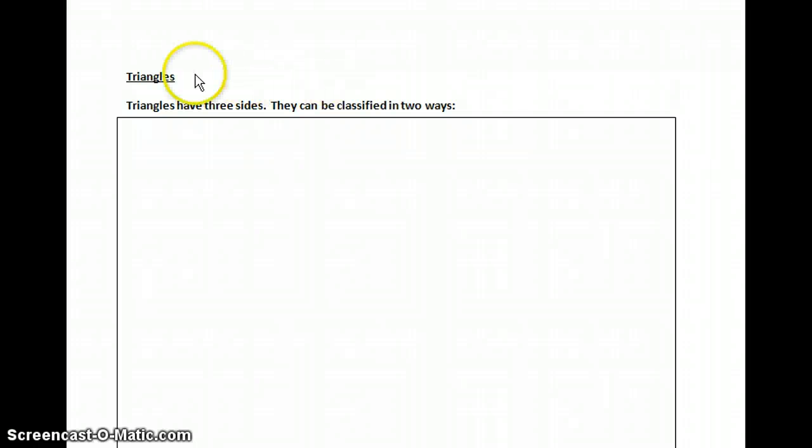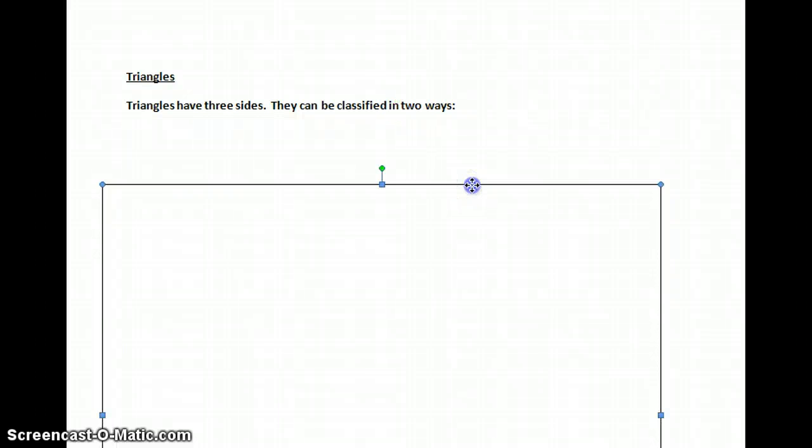A triangle is a special one with the prefix tri, meaning three. Now, they can be classified in two ways. Our first is if we classify a triangle by its number of sides.